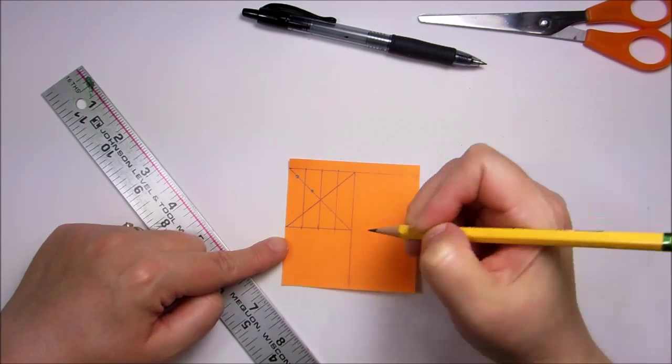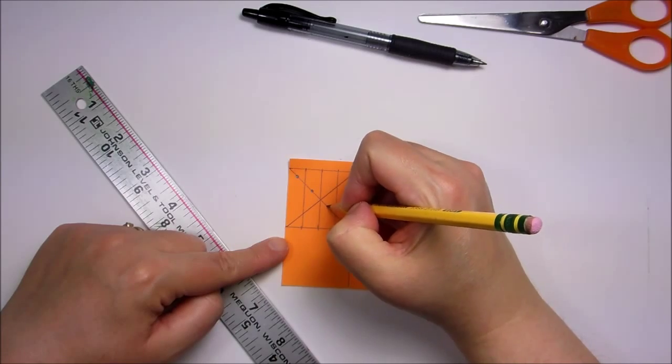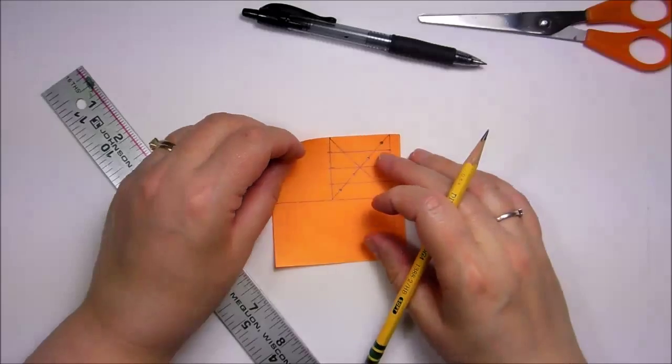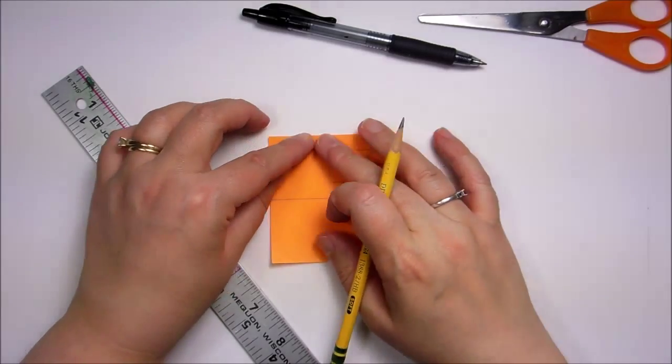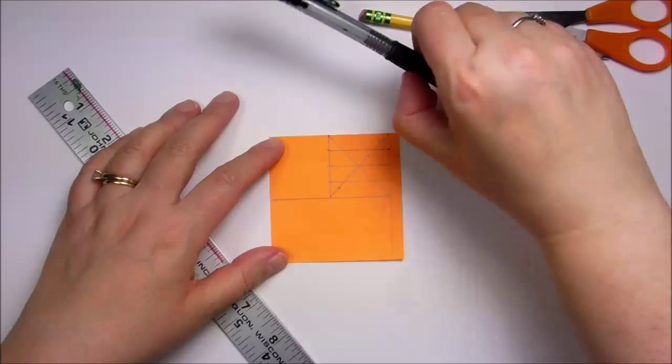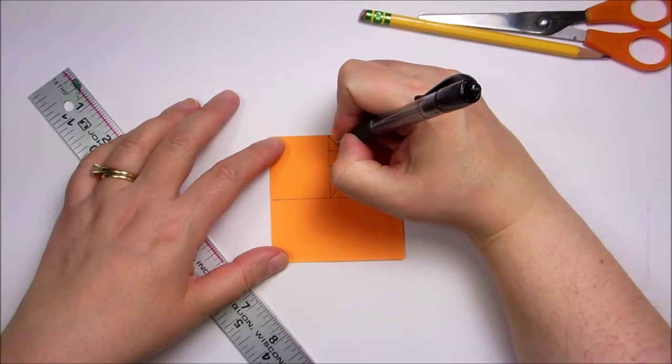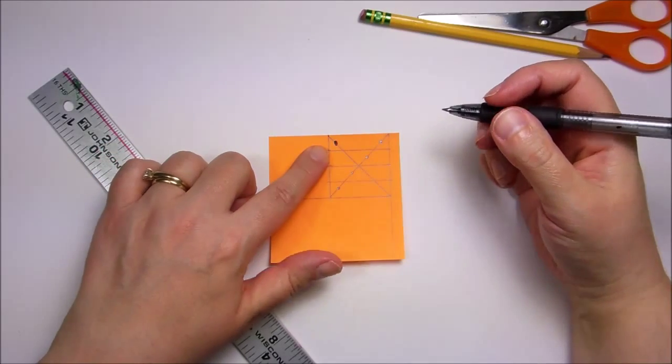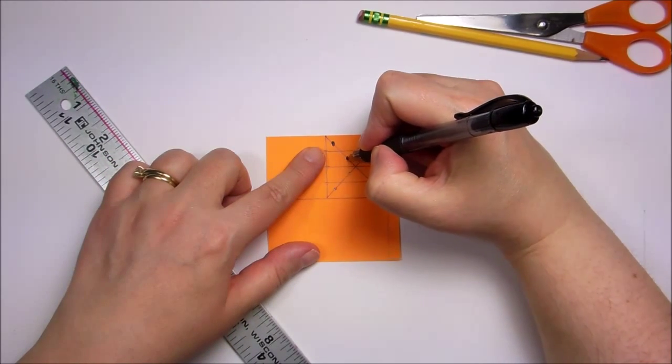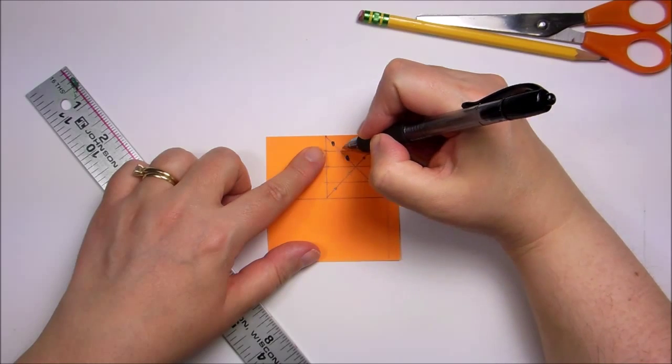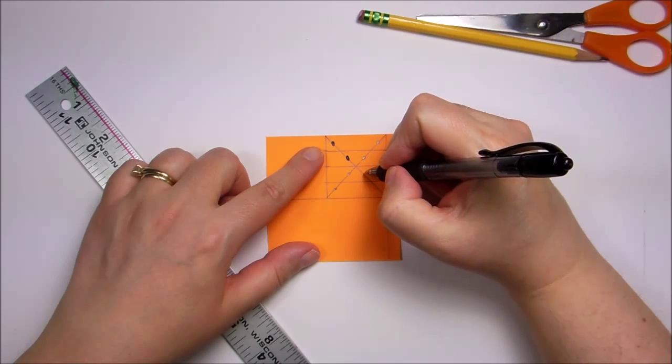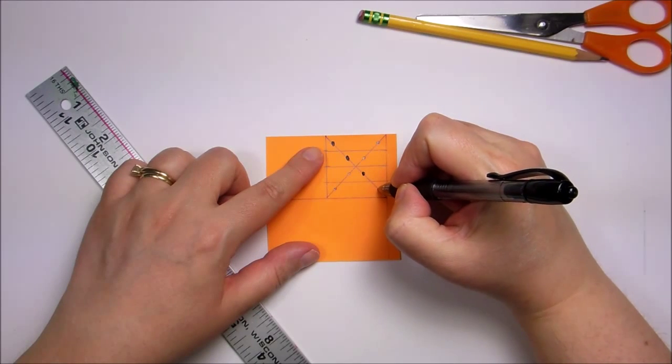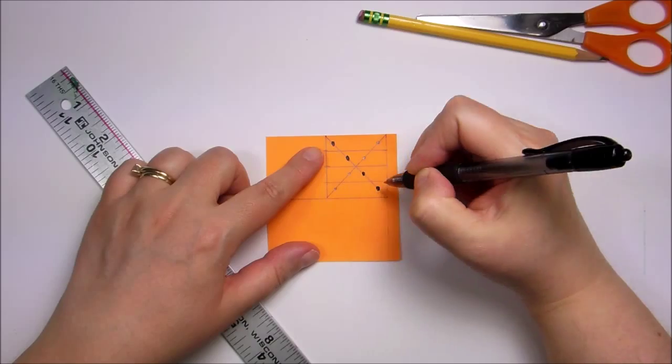Basically what you're going to do is you can eyeball the centers. Find the center point on these lines. The ones I've always been using, I'm going to color in black. So this is the one that I want right there, this upper right, upper left corner. Find the center of the next one, and then the center of the next one, and then the center of the next one.